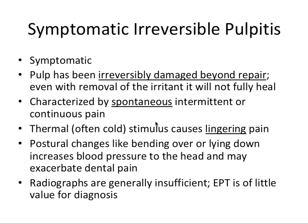Next we have symptomatic irreversible pulpitis. Microscopically, the pulp has little micro abscesses — pockets of inflammation and infection — along with intact nerves at the same time, making this very, very painful and certainly symptomatic. This is where the pulp has been irreversibly damaged beyond repair, and even with removal of the irritant, it will not fully heal.